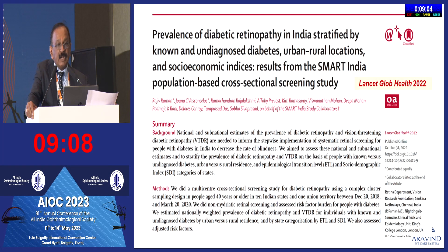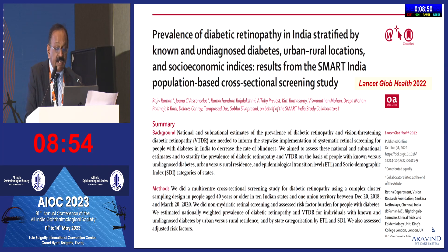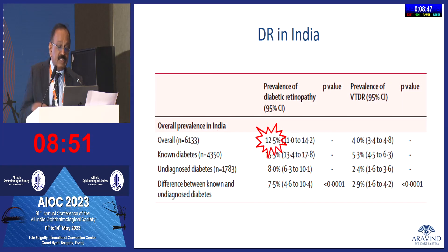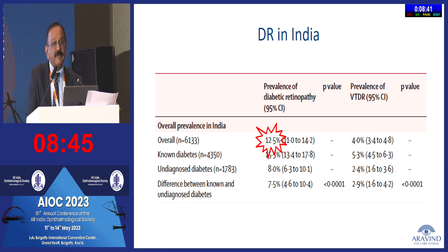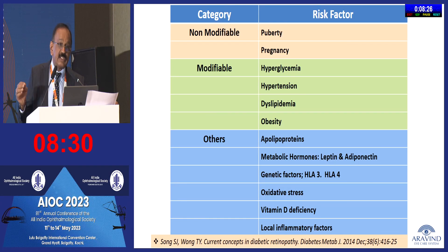The ORNATE India study, a multi-centric study done across 10 states, looked at the prevalence of diabetic retinopathy in both urban and rural populations. It showed that the overall prevalence of diabetic retinopathy above age 40 was around 12.5%. More importantly, sight-threatening retinopathy was found in 4% — which is a very huge number. We are losing patients to diabetic retinopathy faster than we can manage them. I will restrict my talk to systemic parameters.